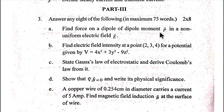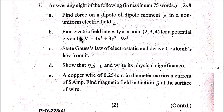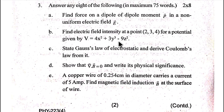Write maximum power transfer theorem. Define steady current and transient current. Number three: Find force on a dipole of dipole moment P vector in a non-uniform electric field E vector. Find electric field intensity at a point (2, 3, 4) for a potential given by V equal to 4X squared plus 3Y squared minus 9Z squared.